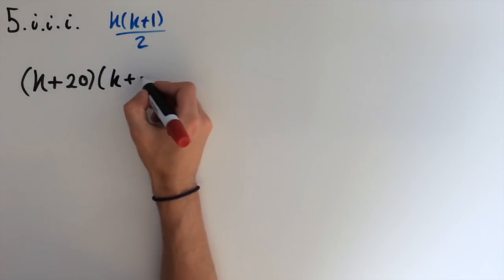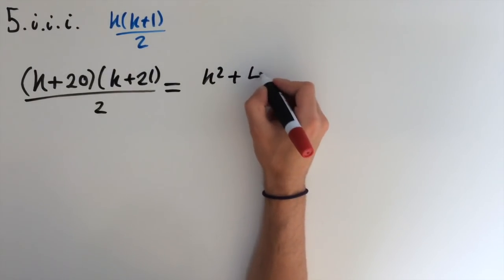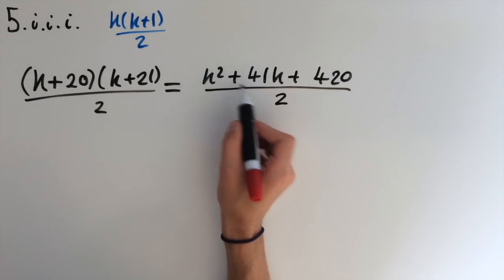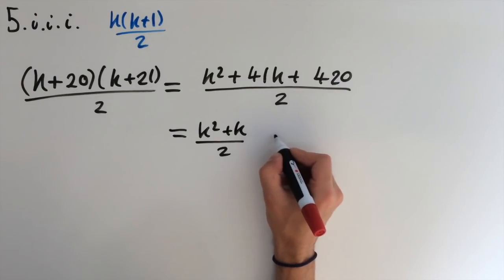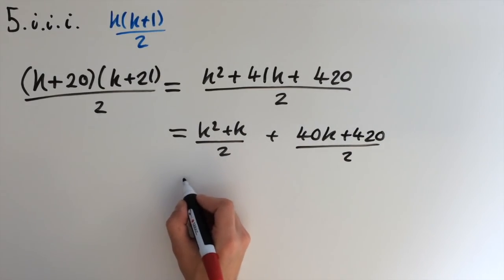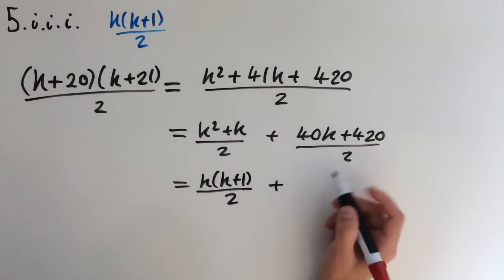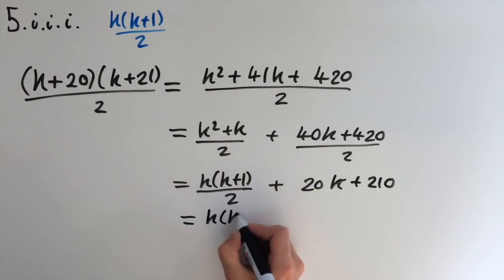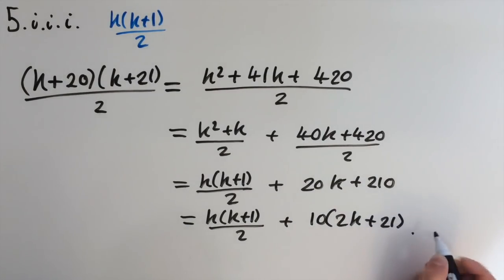So k plus 20 times k plus 21 over 2. Now we can expand this out as k squared plus 41k plus 420, all over 2. So I'm going to take out the k squared and a k, and we'll get k squared plus k over 2. We'll leave this separate. And we're left with 40k plus 420 over 2. And again, we can factorize this out to get k times k plus 1 over 2. And then plus, we can divide this by 2, we get 20k plus 210. Last step is to factorize the 10 out. So we have 10 times 2k plus 21. And this is a multiple of 10. So by the same argument as in the last part, the k plus 20th sweet gets given to the same child as a kth sweet.